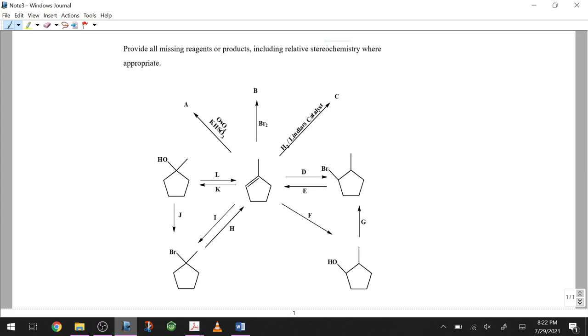In this case we have a few things to deal with: we have regiochemistry possibly, we have missing reagents for some, we have missing products for others, and we have relative stereochemistry in a couple of cases, specifically A and B, since those are the only ones that have anything to do with stereochemistry.